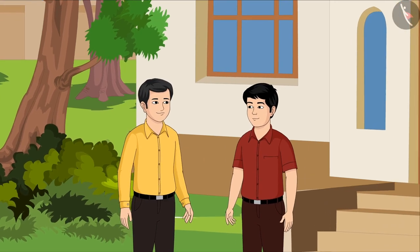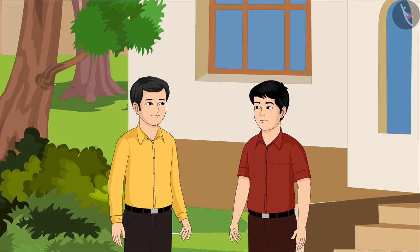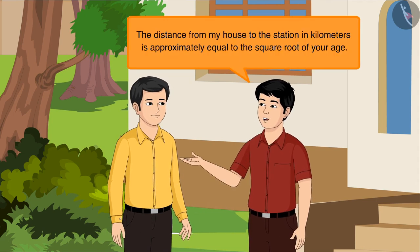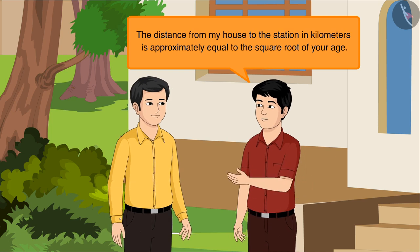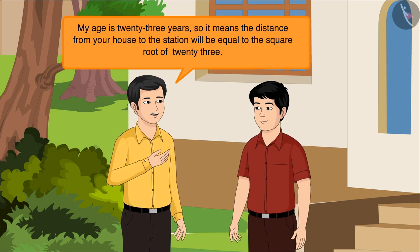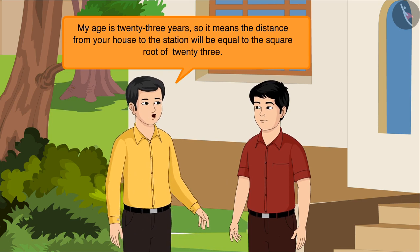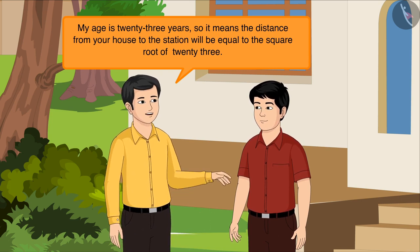Amit answered his question in the form of a riddle. The distance from my house to the station in kilometers is approximately equal to the square root of your age. My age is 23 years.